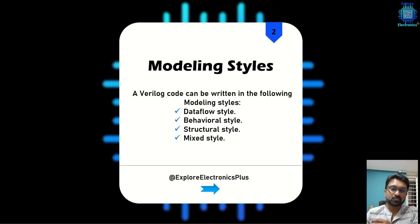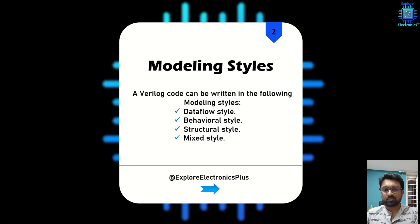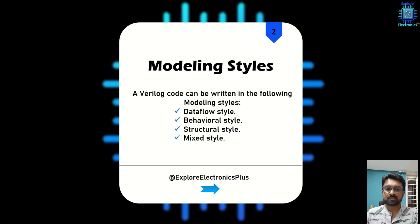Data flow style describes how the data flows between the modules. In behavioral style, we use the two main constructs of Verilog — 'always' and 'initial' blocks — that describe the behavior. Here in behavioral style we can use conditional statements, loops, and the different structures from C that are incorporated here.